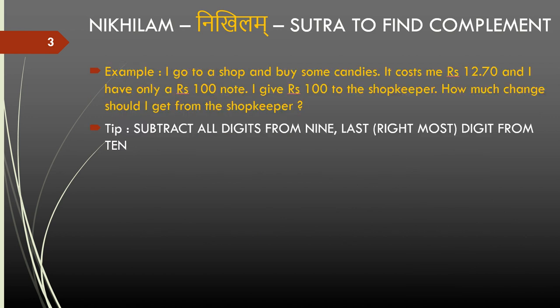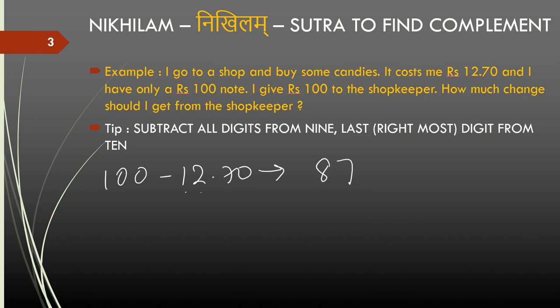So where is it useful? It's very useful. For example, if I go to a shop and I buy some candies and it costs me 12 rupees 70 paise and I have a 100 rupee note — if I give the 100 rupee note to the shopkeeper, how much change should I expect? So what we are trying to calculate is 100 minus 12.70. All we need to do is apply the rule, all from 9 last from 10: 9 minus 1 is 8, 9 minus 2 is 7, 10 minus 7 is 3, and then there is a zero at the end. Since there is a decimal point with two digits on the right, I add the decimal here. So the change is 87 rupees 30 paise. This is how we use complements.